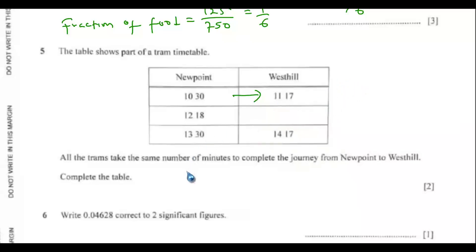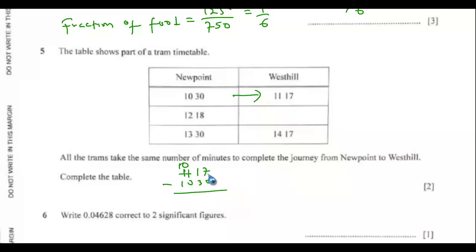To find the journey time, subtract 10:30 from 11:17. Since 17 minus 30 is impossible, borrow one hour (60 minutes), giving 77 minus 30 equals 47 minutes. So the journey takes 47 minutes.